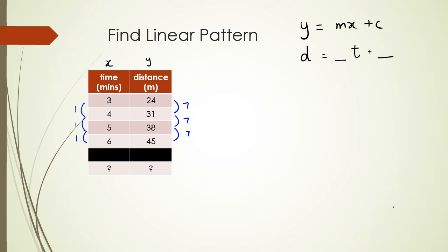We can now write the equation as d = 7t + c. To find c using the table extension method, I extend time back: 3 → 2 → 1 → 0, and correspondingly extend distance back by 7 each time: 24 → 17 → 10 → 3. So when t = 0, d = 3, meaning c = 3, and the equation is d = 7t + 3.